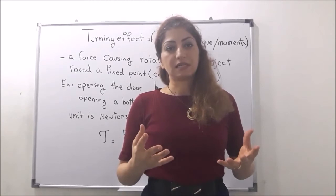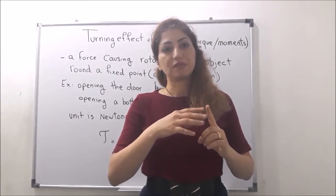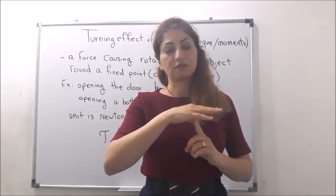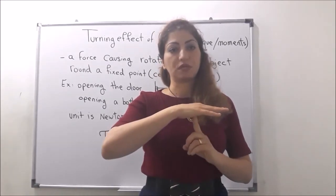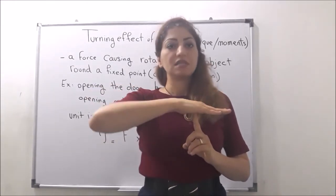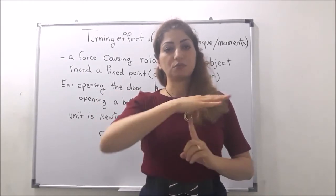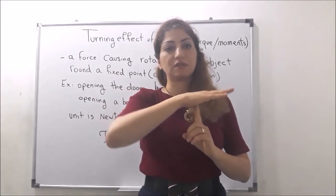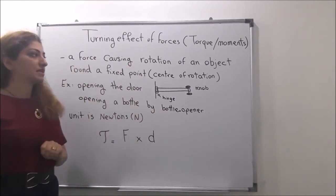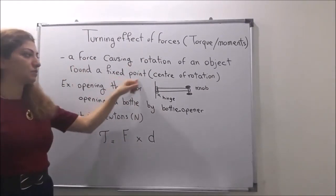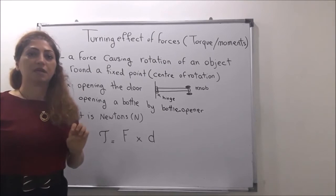If you apply a force on an object which can move around a pivot, or a center of rotation from a fixed point, this is the torque or the moment of this force that causes the object to rotate in any direction around a fixed point. A force can cause rotation of an object around a fixed point or center of rotation, which is called a fulcrum or a pivot.